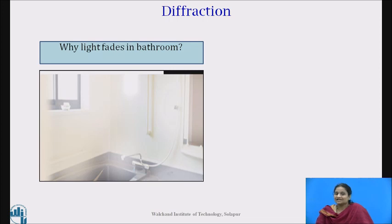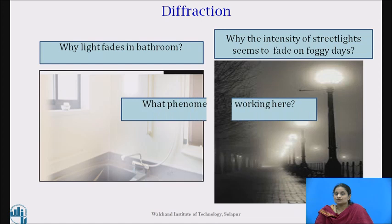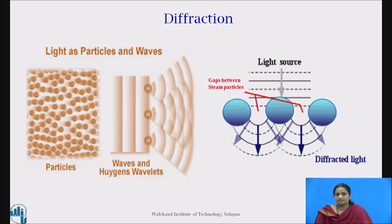Now let us see another example. You have observed that the light fades in the bathroom. Another example is about street lights — they seem to fade on foggy days. So why does this happen? Actually, light has two kinds of properties: electromagnetic waves and particles. The phenomena we have just mentioned result from diffraction, which is one of light's characteristics as a wave. Diffraction occurs when light hits and bends around an object. In a bathroom, light hits steam particles, which cause it to bend around and fade.